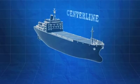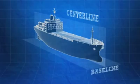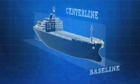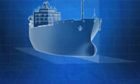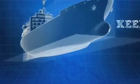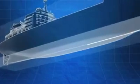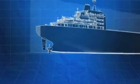The centerline is a vertical plane that runs the length of the ship at the midpoint of its beam, and the baseline is a horizontal plane perpendicular to the centerline, located at the lowest point of the hull. The keel is the principal structural member of a ship, running lengthwise along the centerline from bow to stern, to which the ship's frames are attached.